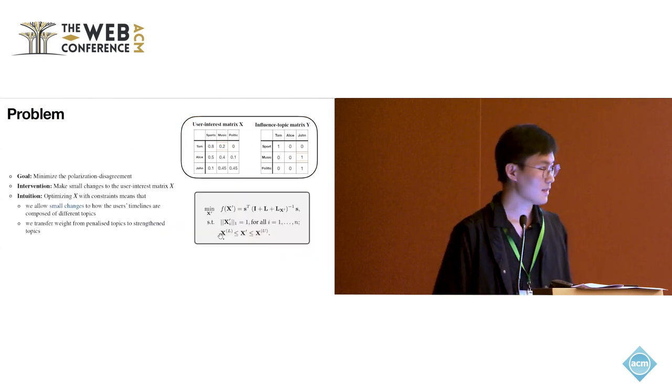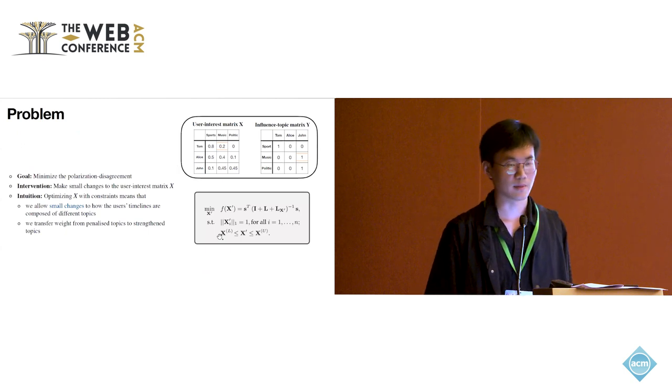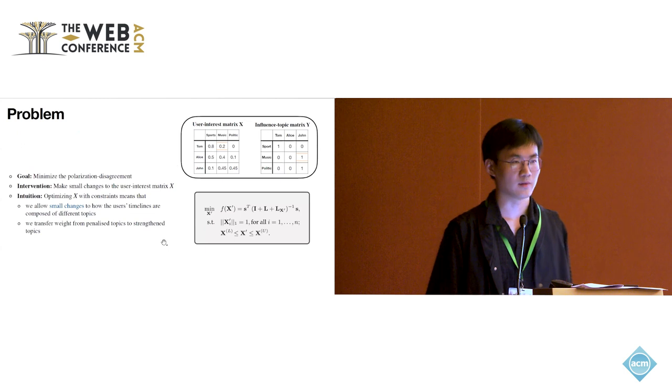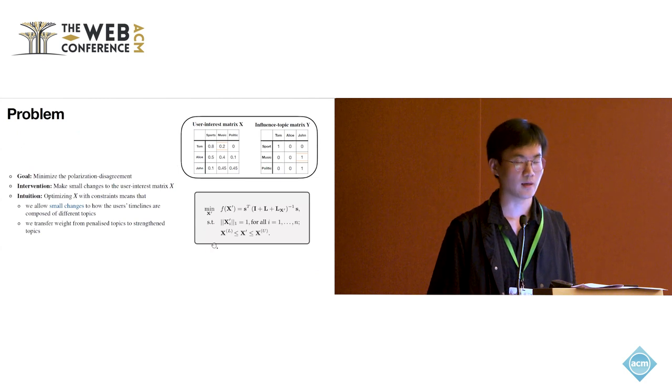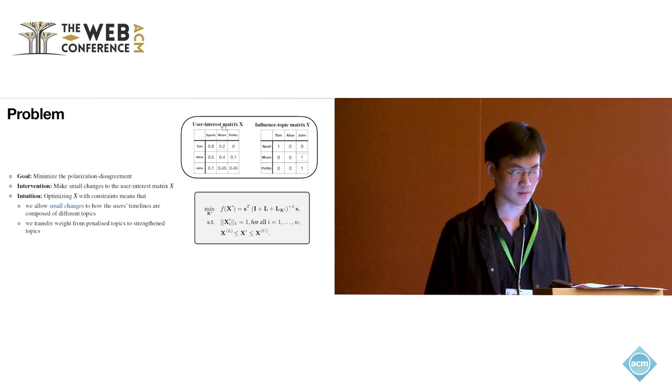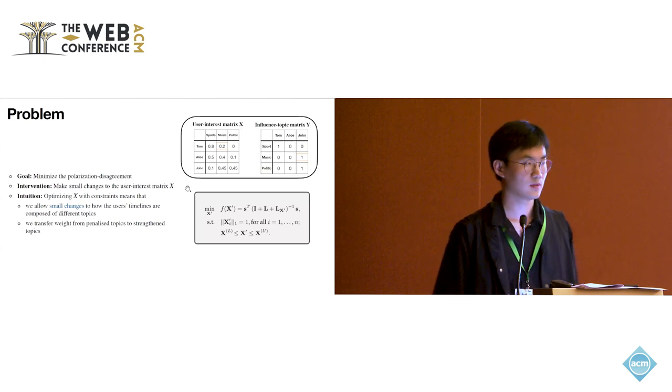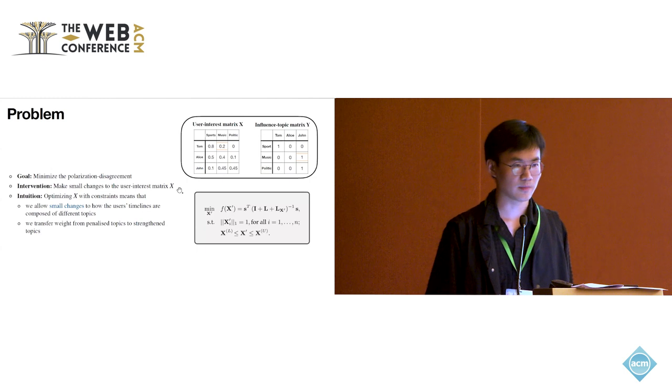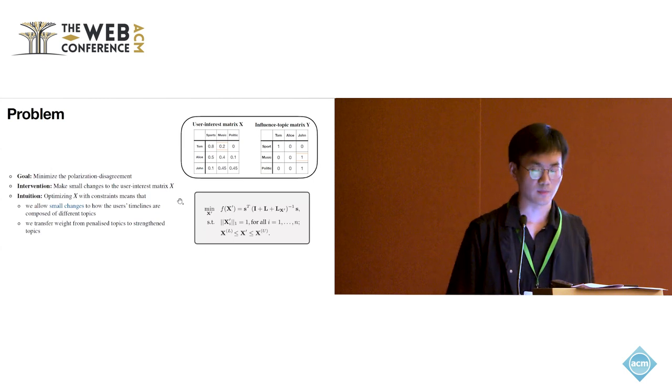Given the opinion dynamics model and the way to model the timeline algorithm, we state the problem of minimizing the polarization disagreement with some constraints. Apart from the constraint of row stochastic, we put element-wise lower bound alpha on user interest matrix X. Intuitively, we are allowed to do some small changes on X that we can transfer weights from penalized topics to strengthen topics.